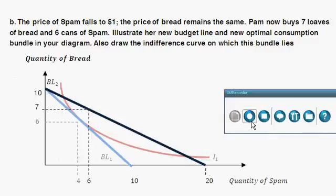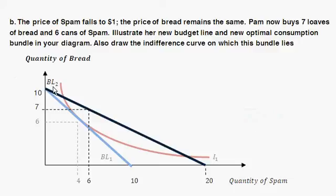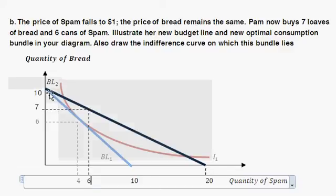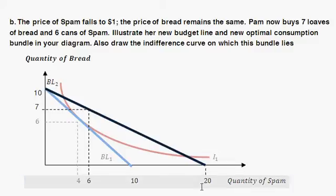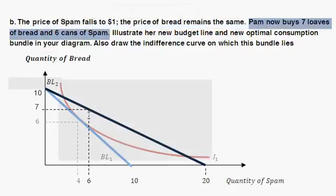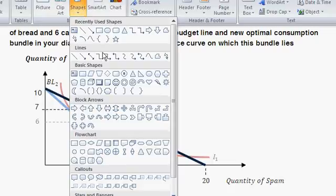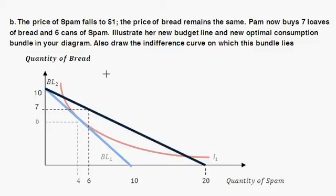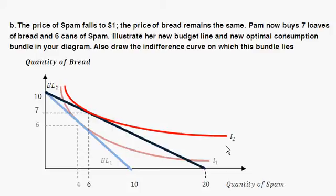So this is our new budget line — I'll call it BL2. With a $20 budget, she could spend a maximum of 10 loaves of bread, or buy a maximum of 20 cans of spam. We're then told that Pam's new optimal consumption bundle is seven loaves of bread and six cans of spam. So this is our new optimal consumption bundle. The last thing we need is the new indifference curve, which is exactly tangent to the budget line at seven loaves of bread and six cans of spam, reflecting a higher utility than before.